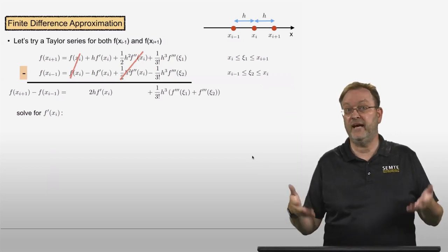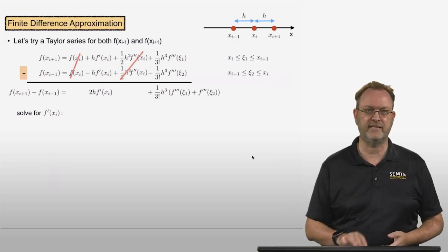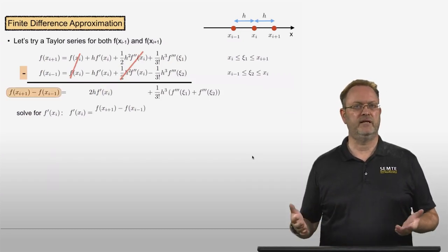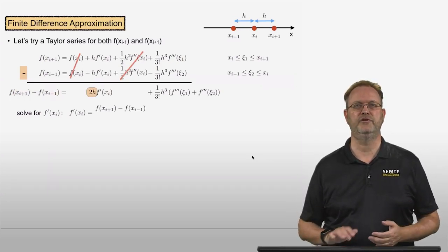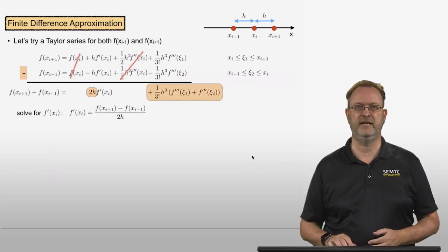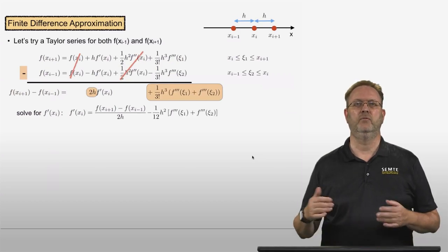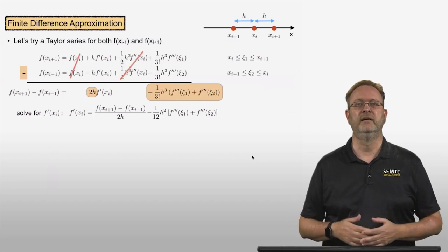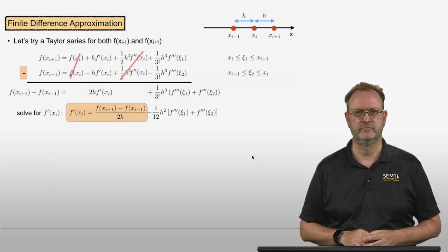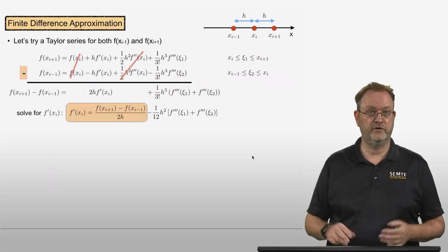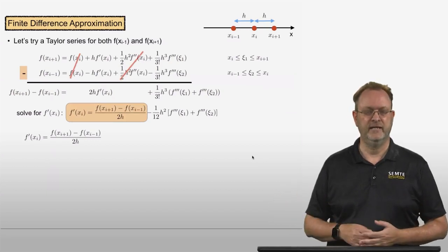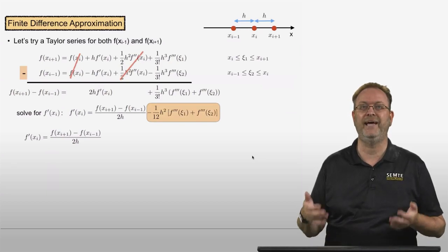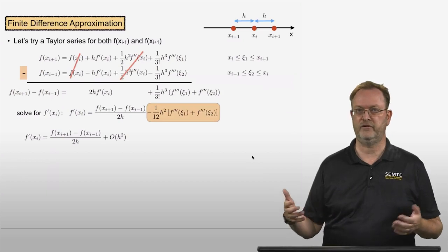I'm interested in calculating f prime at xi, so let me solve for it. f prime of xi equals f of xi plus 1 minus f of xi minus 1, divided by 2h. The truncation error comes from the Taylor's theorem term divided by 2h, giving 1 over 12 times h squared times the sum of the third derivative terms. So if I use the central difference formula, the truncation error is proportional to h squared — this is a second order method.